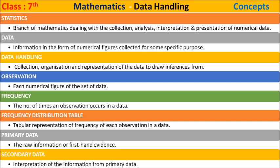Data is information in the form of numerical figures collected for some specific purpose. Data handling is the collection, organization, and representation of data to draw inferences from it. An observation is a numerical figure in the set of data.